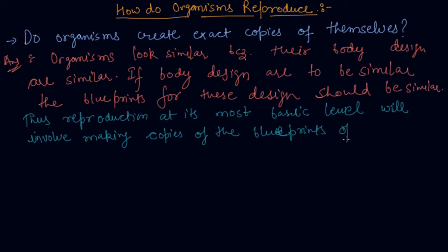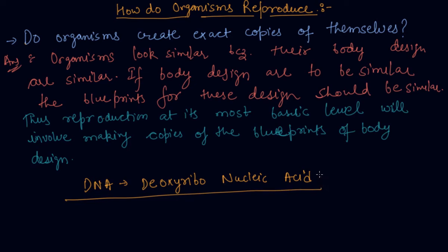In the previous classes, we have learned that the chromosomes in the nucleus of a cell contain information for the inheritance of features from parents to their next generation in the form of DNA. DNA stands for deoxyribonucleic acid.